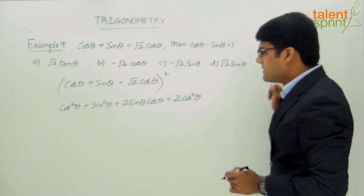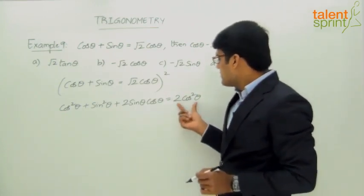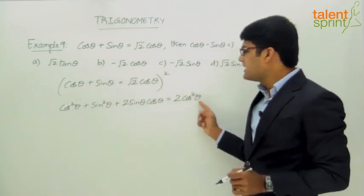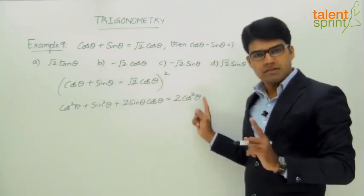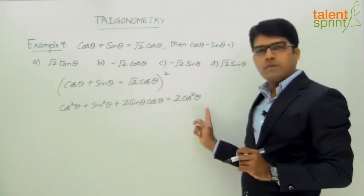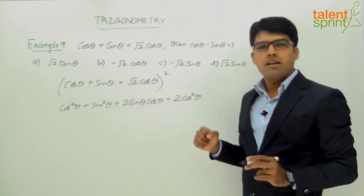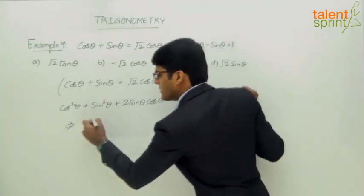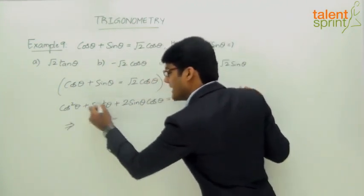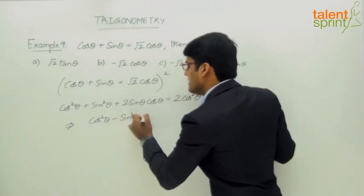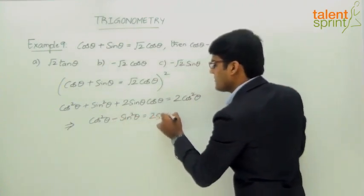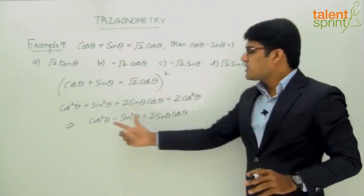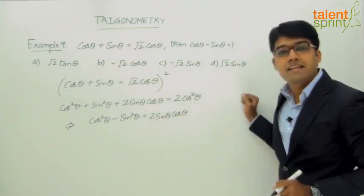Now simplifying: cos squared theta and sin squared theta move to the right side. So 2 cos squared theta minus cos squared theta is cos squared theta, and minus sin squared theta equals 2 sin theta cos theta. This gives us cos squared theta minus sin squared theta equals 2 sin theta cos theta.